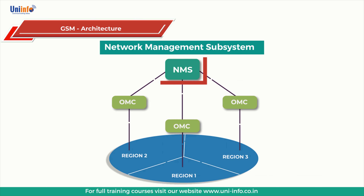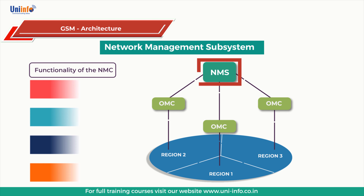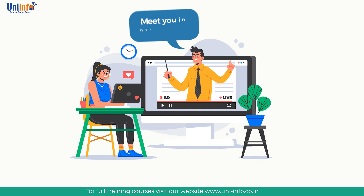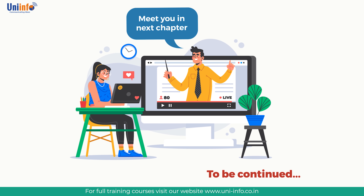Our next topic is network management subsystem (NMS). The NMS consists of software only. The subsystem contains functions for supervising the traffic flow through the exchange and for introducing temporary changes in that flow — for example, if there was an overload of traffic on a particular route. The NMS offers hierarchical regionalized network management of a complete system. Functionality of the NMS includes: first, monitors nodes on the network; second, monitors network element statistics; third, monitors OMC regions and provides information to OMC staff; fourth, enables long-term planning for the entire network. This concludes this chapter.